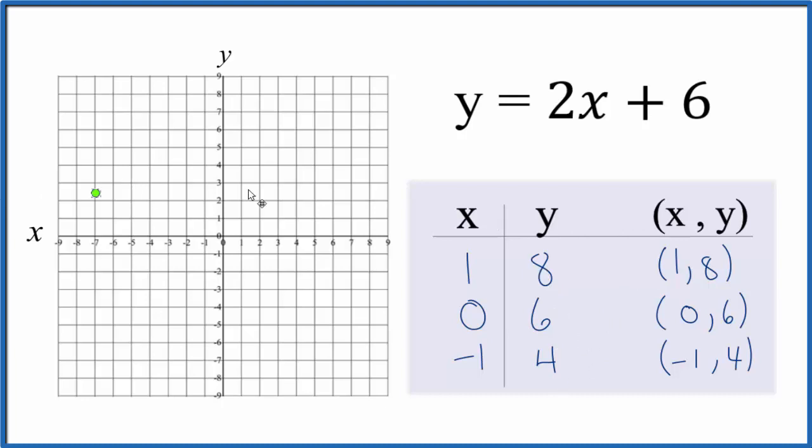Now we can put these on our graph. We have (1, 8), so x is 1 and y is 8 up here. Then we have (0, 6), so x is 0 and y is 6. Finally, we have (-1, 4): x is -1 and y is 4. You can see they're all in a line.